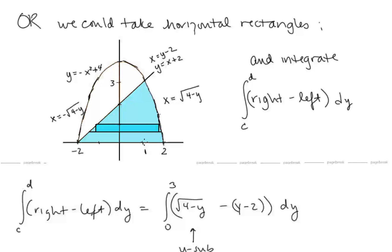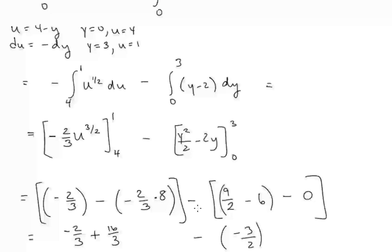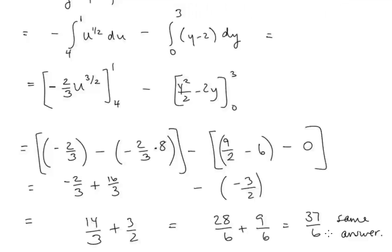The intersection point at x equals 1 corresponds to y equals 3, so we integrate from 0 to 3 on y. We have the integral of radical (4 minus y) minus (y minus 2) dy from 0 to 3. This requires a u-substitution: let u equal 4 minus y, so du equals negative dy. Integrating and combining, we get the same answer of 37 sixths.